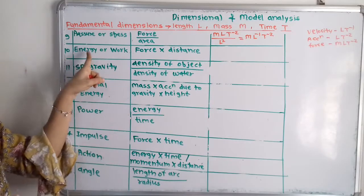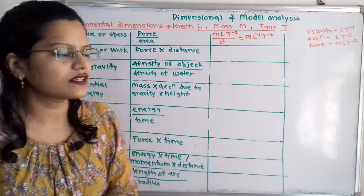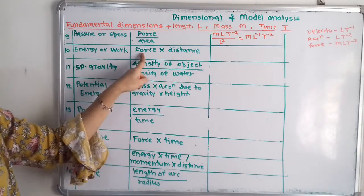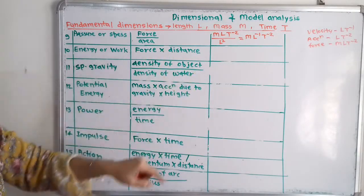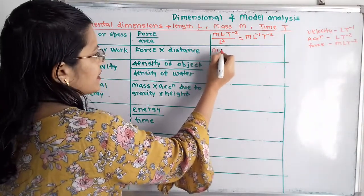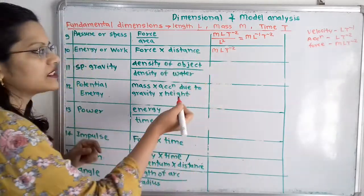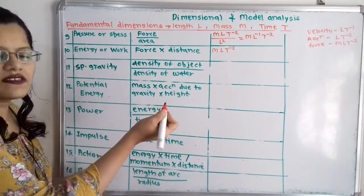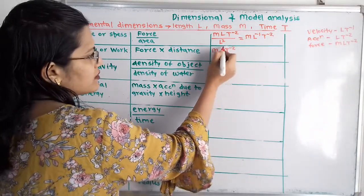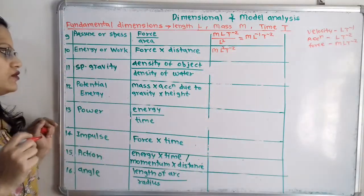Then energy or work. Energy or work is force into distance. For force we take MLT raised to minus 2, multiplied by distance which is length L. So L into L gives L squared, and the dimension is ML squared T raised to minus 2.